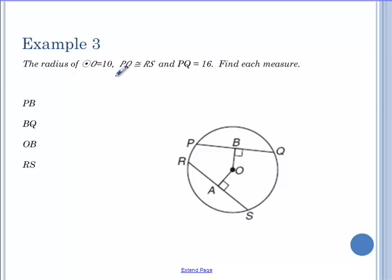So radius of the circle is 10. P, Q, this chord here is congruent to this chord here. And I know PQ is 16. So I'm actually going to not write 16. I'm going to write 8 and 8 and 8 and 8. PB is 8. I already answered that. PQ is 8. I already answered that. I need to find OB, and I know RS, since the chords are congruent, RS is going to be 16 as well.